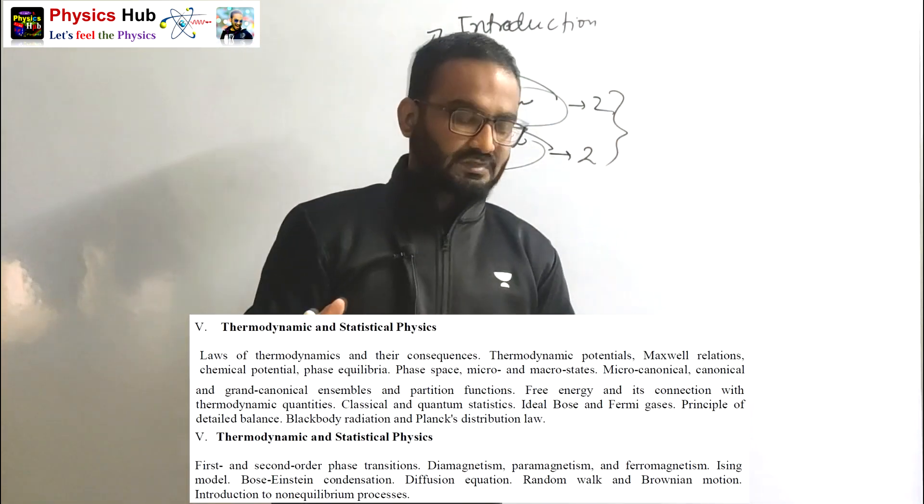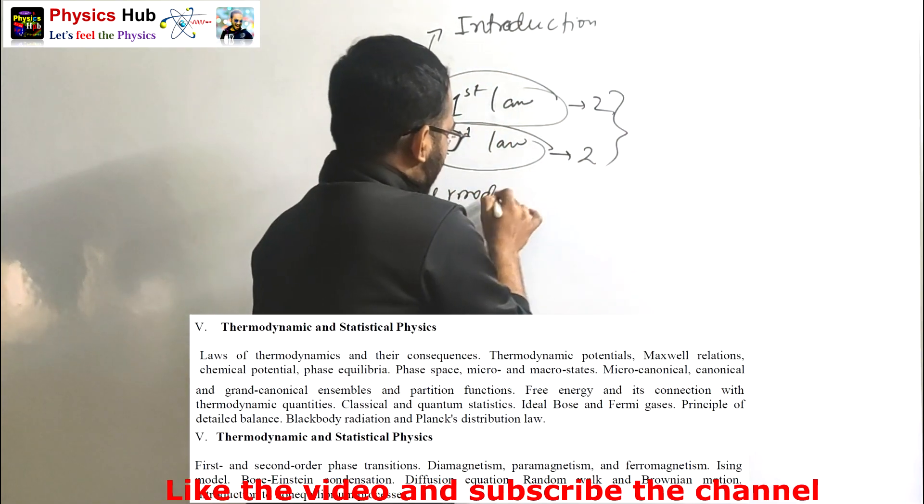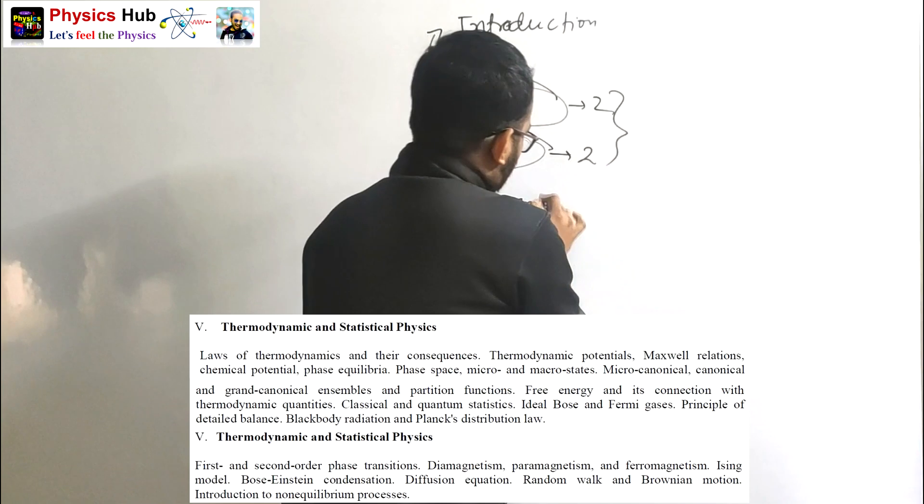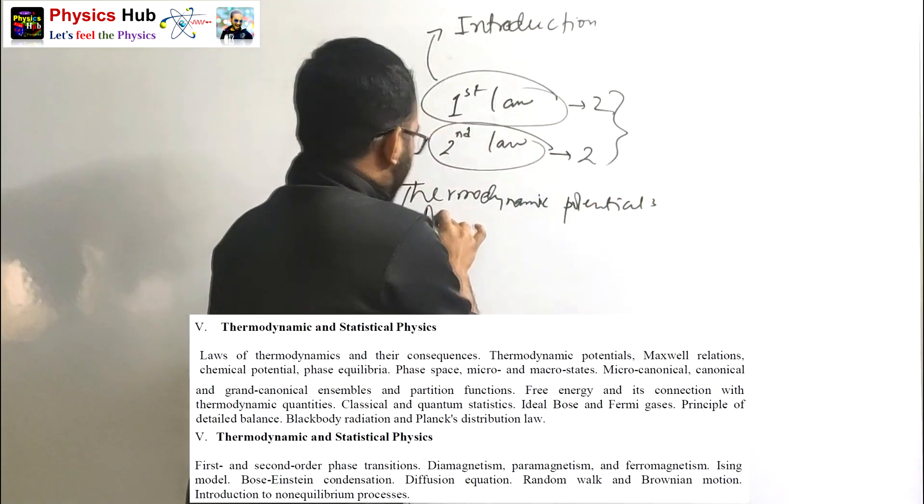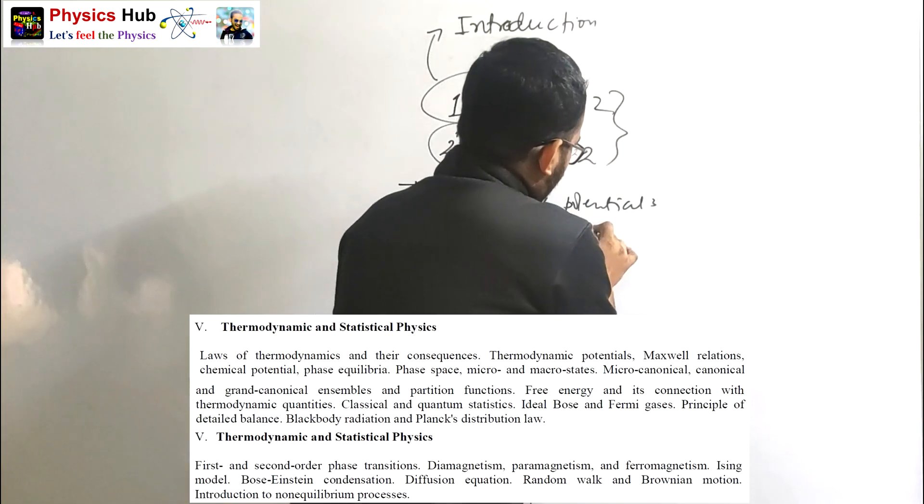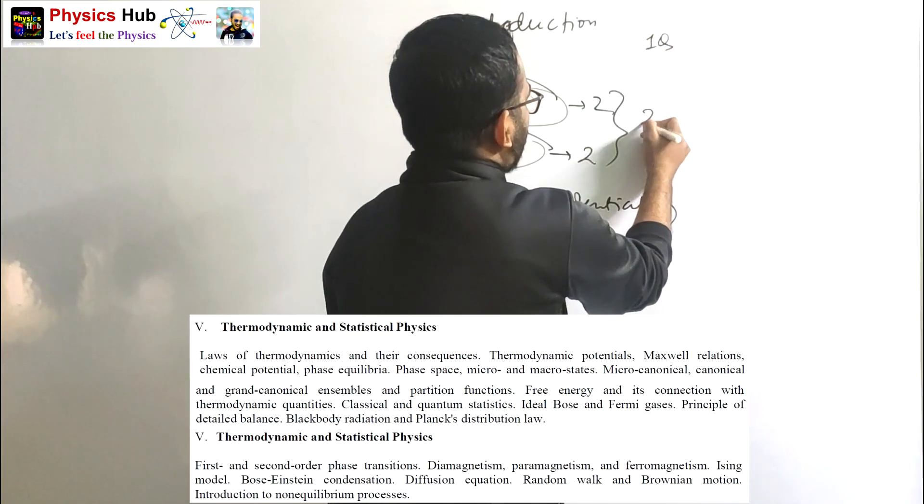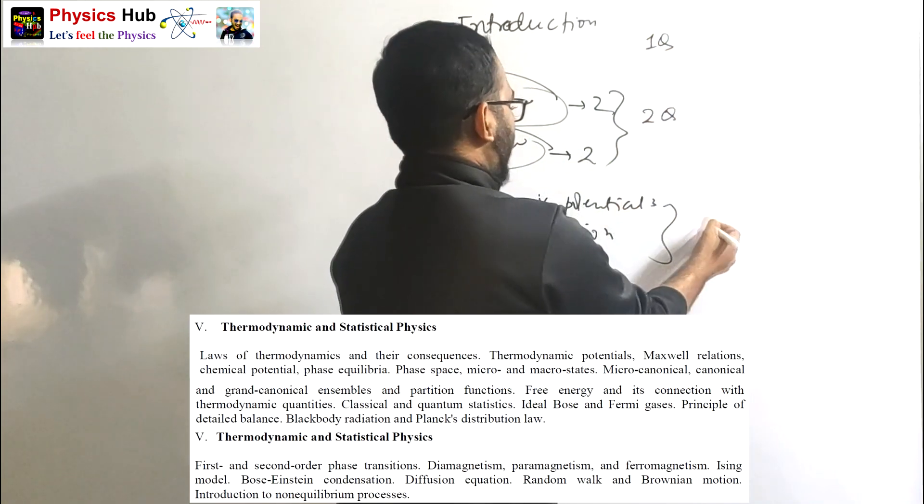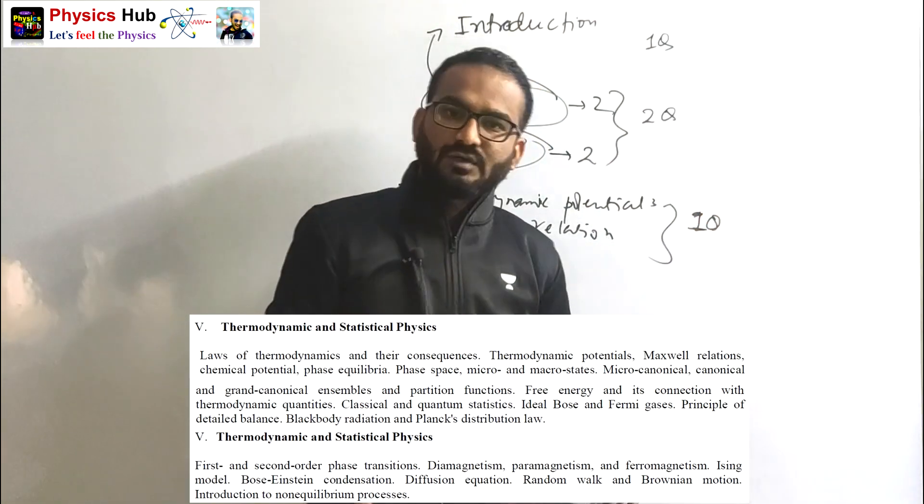Thermodynamic potentials and Maxwell's relations will take one or two classes. You can expect from this introductory part one question may come. From first and second law, two questions may come. From Maxwell's relations, one question may come - mostly 3.5 marks, but you can also expect a 5 marks question.